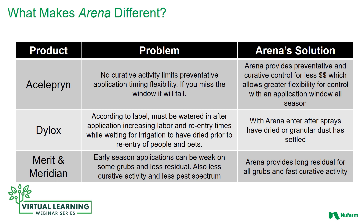Merit and Meridian early season applications can be weak — they break down, and both have a narrower pest spectrum compared to Arena. Arena has that long residual and picks up more species.